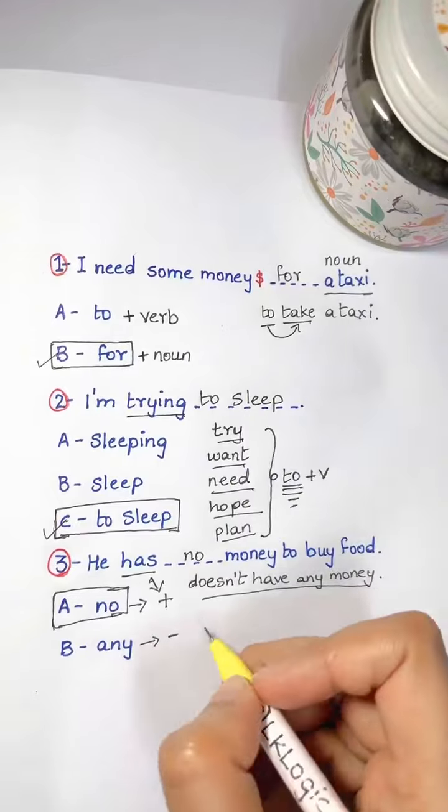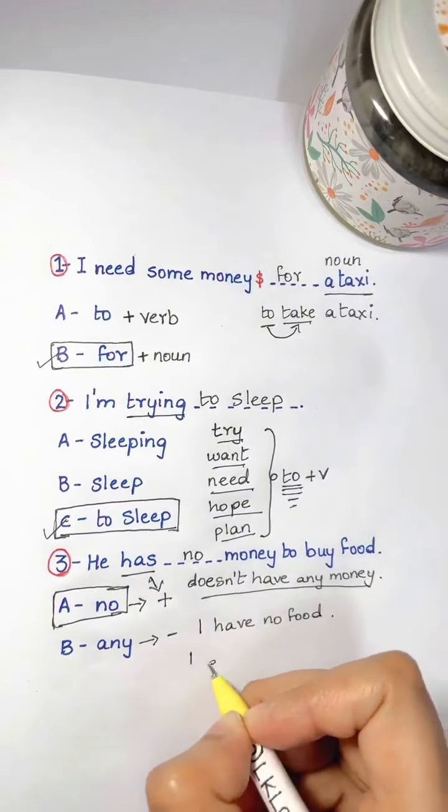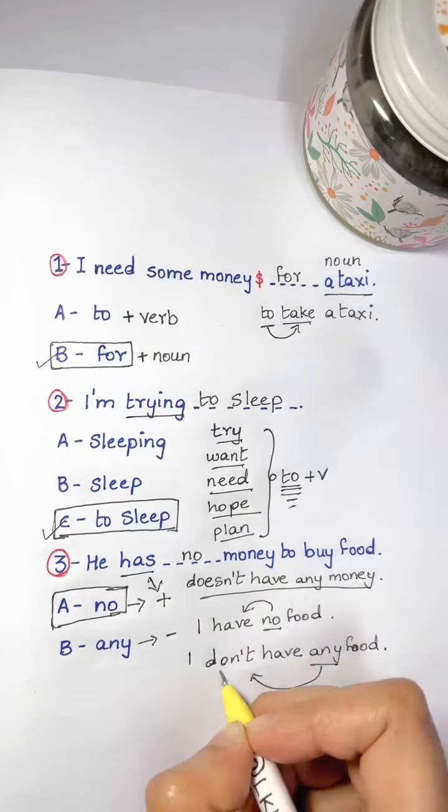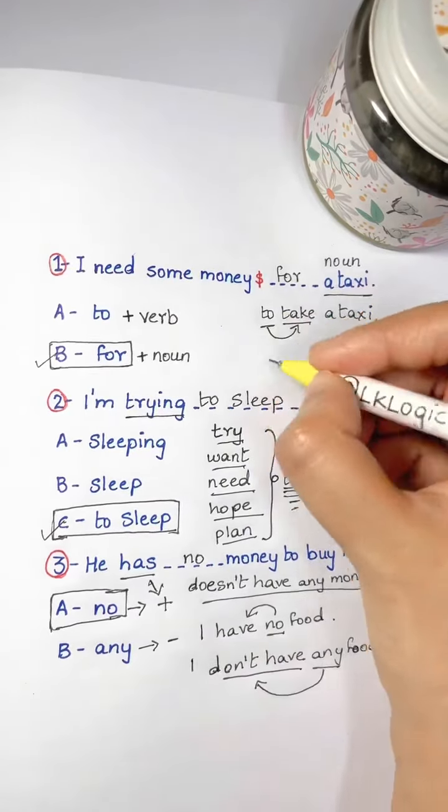So that's the difference between no and any. We can say I have no food, which means I don't have any food. No comes with positive verb, any comes with a negative verb, and they have the same meaning.